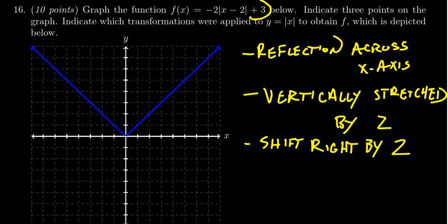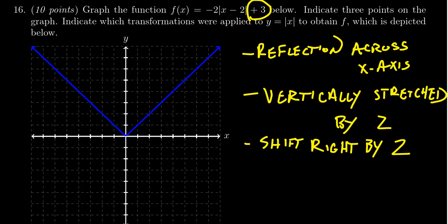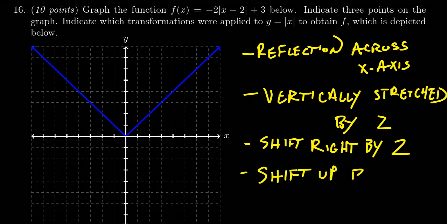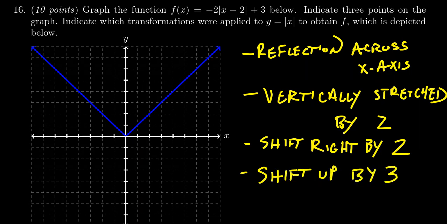And then lastly, we have this plus three. Notice it's outside of the horizontal zone. So this is a vertical transformation. The plus three is in fact going to be a shift upward by a factor of three. In order to get full credit on this question, you must indicate all of these transformations, these four transformations in play right there.